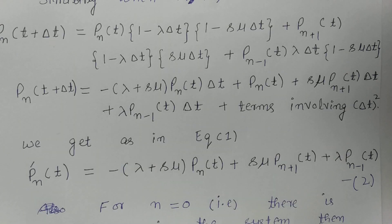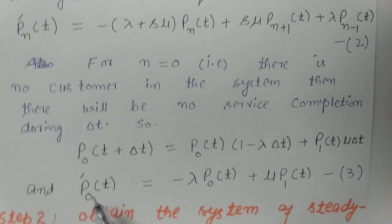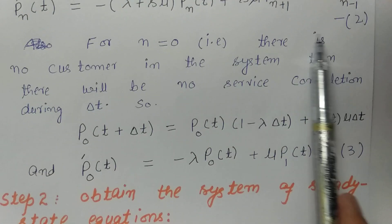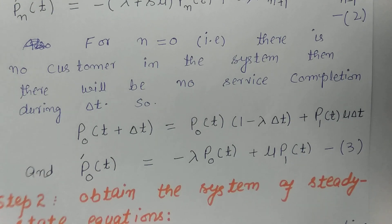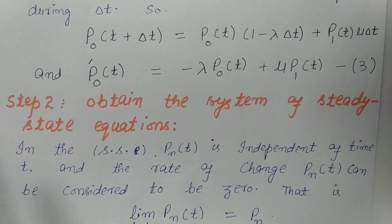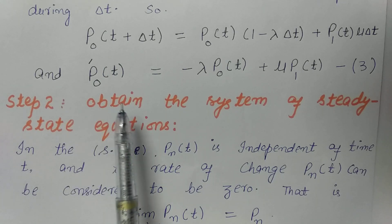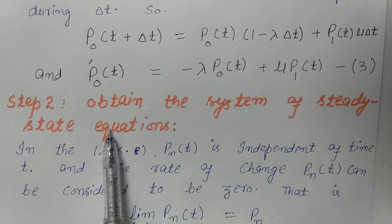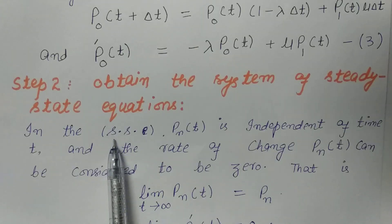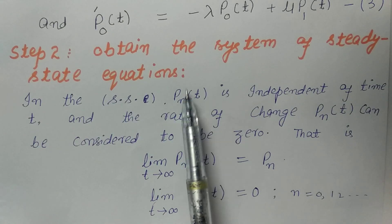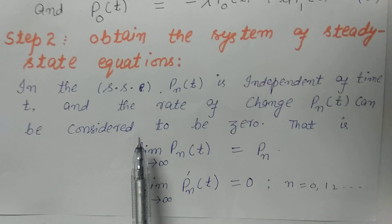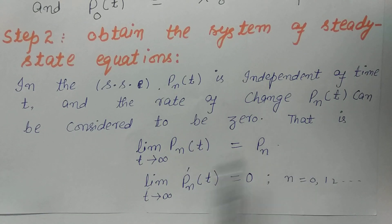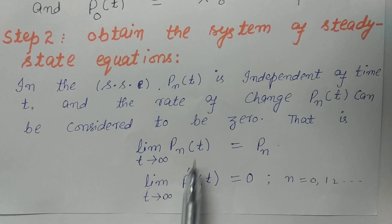Equation 3 is similar to the previous model for N equal to 0. Now we proceed to Step 2: obtaining the system of steady-state equations. Since P_N is independent of T in steady state, the rate of change P'_N(t) is set to zero. So limit as T tends to infinity of P'_N(t) equals 0, and P_N(t) approaches P_N.